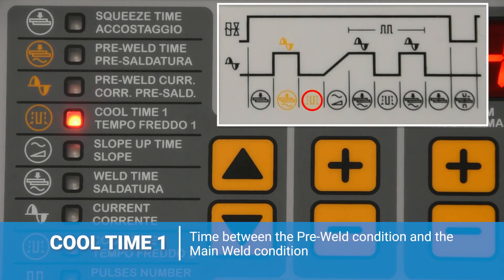Next, we have cool time 1, or the first cool time, and this is set between 0 and 50 cycles. This value is the time between the pre-weld condition and the main weld condition.